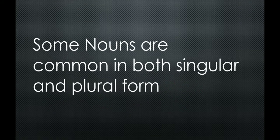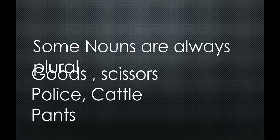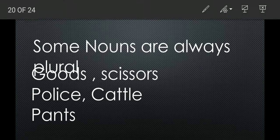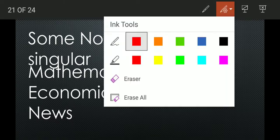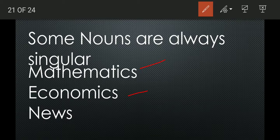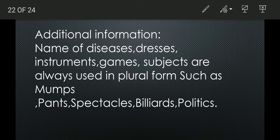Some nouns are common in both singular and plural form. Some nouns are always plural: goods, scissors, police, cattle, pants. Some nouns are always singular: mathematics, economics, news. Additionally, names of diseases, instruments, games, and subjects are always used in plural form — such as mumps, pants, spectacles, billiards, politics.